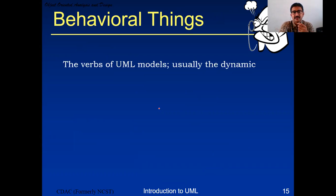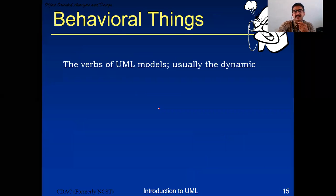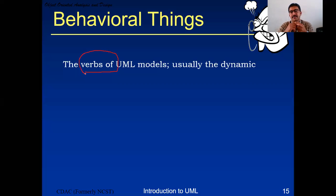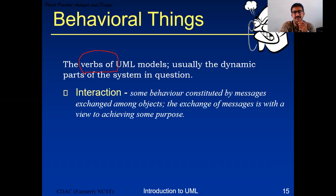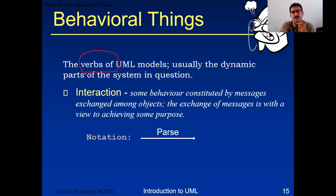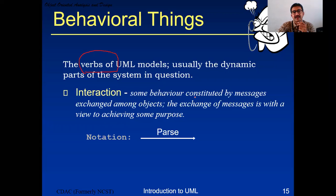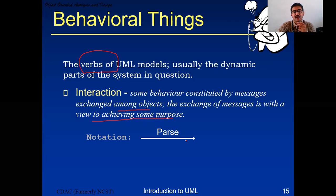The second type of things is behavioral - the verbs of a UML model, representing the dynamic parts of the system. Structural things are nouns and static; behavioral things are verbs and dynamic. The first behavioral thing is interaction - behavior constituted by messages exchanged among objects, to make communication between two objects or components, with a view to achieve some purpose. The notation for interaction is an arrow.